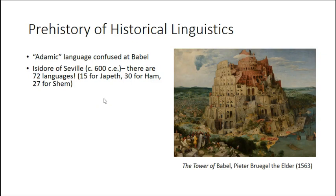According to Isidore of Seville, the Spanish bishop and scholar from around 600 CE, there are 72 languages — as he pronounced with full authority — 15 for Japheth, 30 for Ham, and 27 for Shem. If you know your Bible, you know that these are the three sons of Noah.